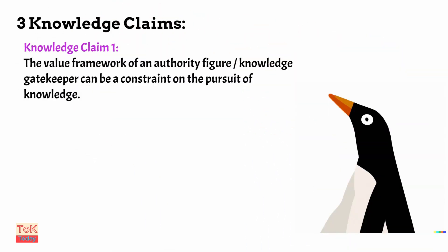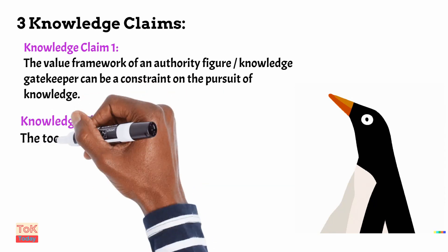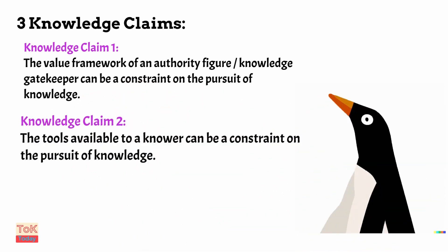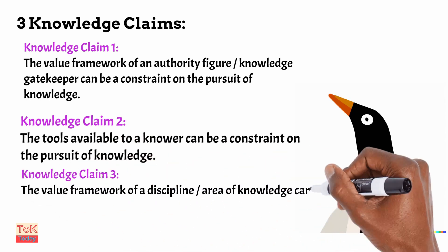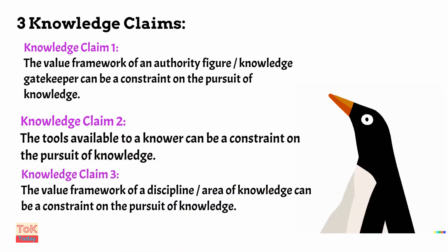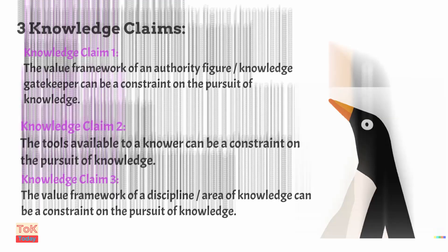Knowledge claim two: the tools available to a knower can be a constraint on the pursuit of knowledge. Knowledge claim three: the value framework of a discipline or area of knowledge can be a constraint on the pursuit of knowledge.